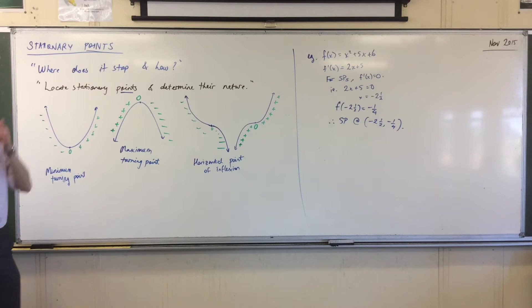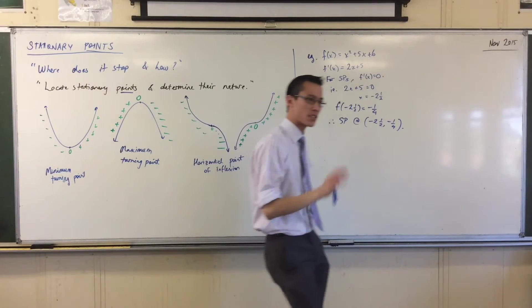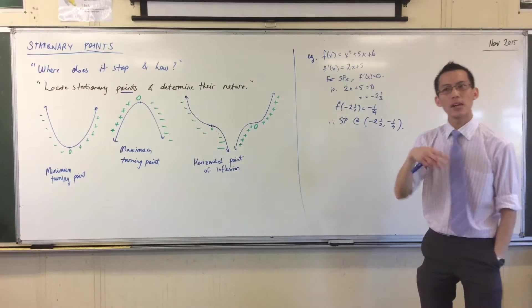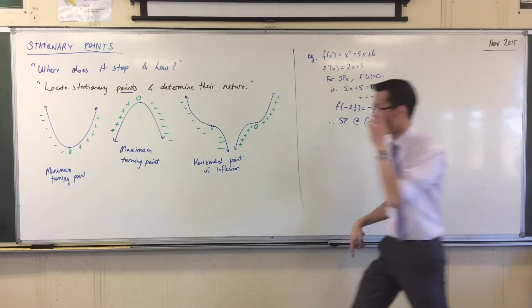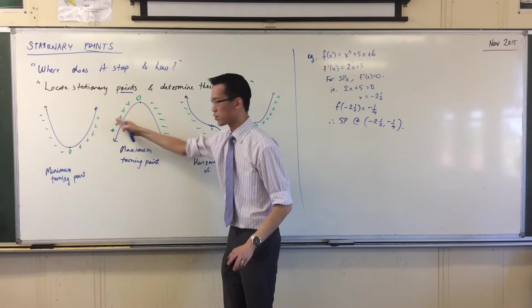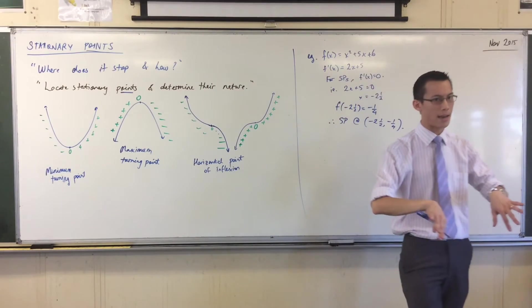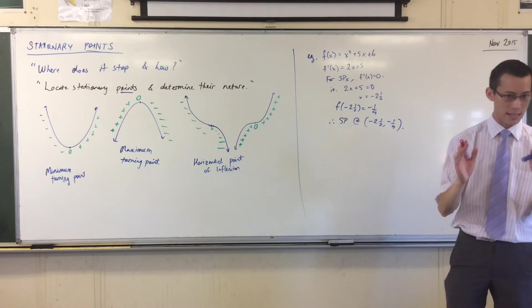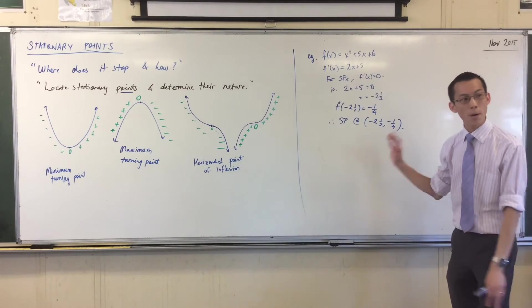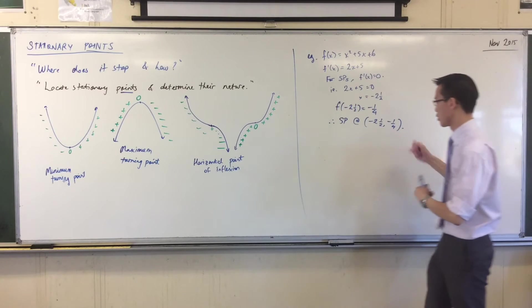To determine the nature, what you really want to pay attention to is all this gradient business. That's why I'm trying to draw your attention to it. In what way does the gradient change on either side? Is it going from negative to positive or positive to negative, or is its sign staying the same on both sides? We're going to draw up a table of values for our gradient derivative. There are other methods you'll learn to do this later on, but for now we're going to use a table.